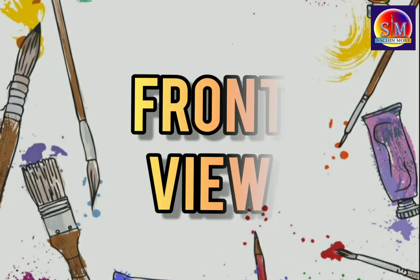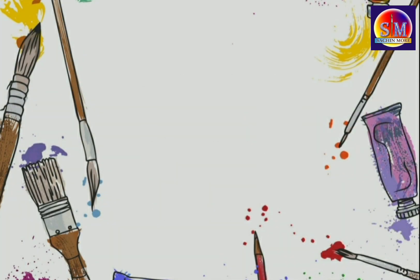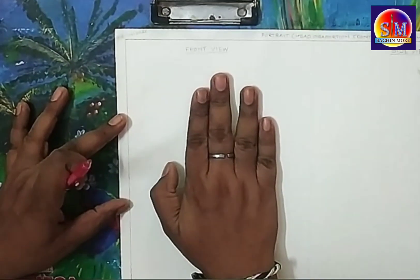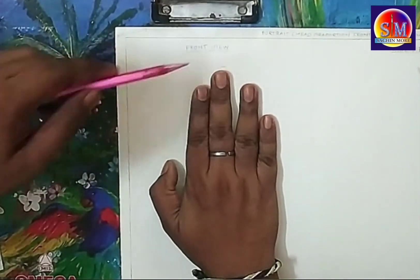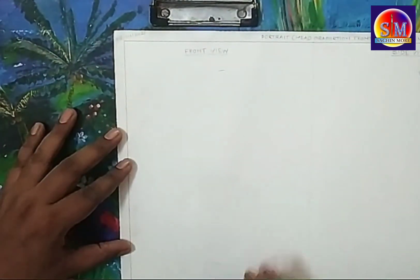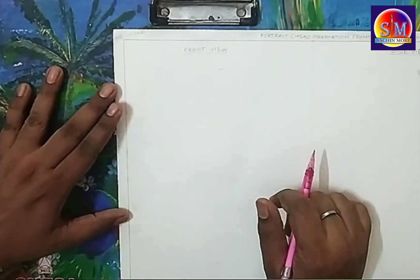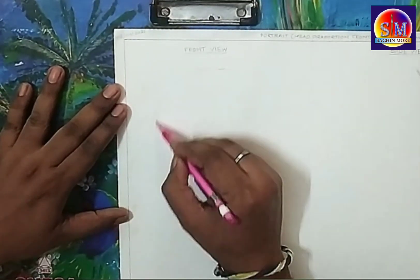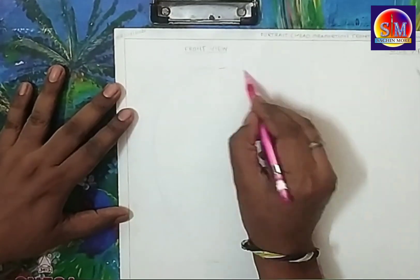Let's start with the front view. First we are going to draw an oval — about one width size — like an egg, pointed toward the bottom.